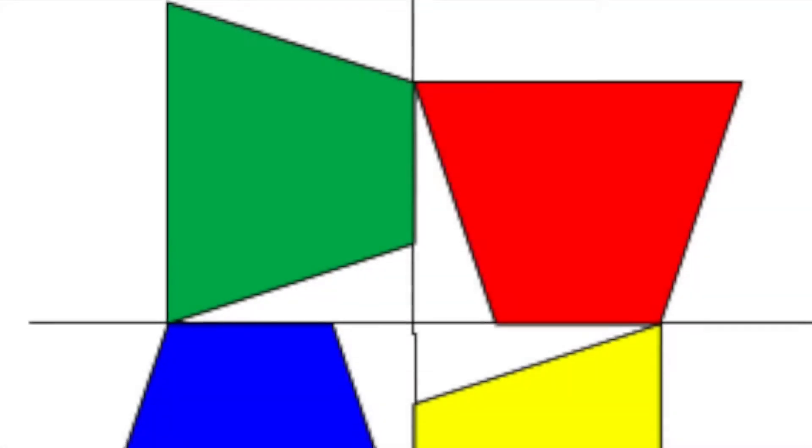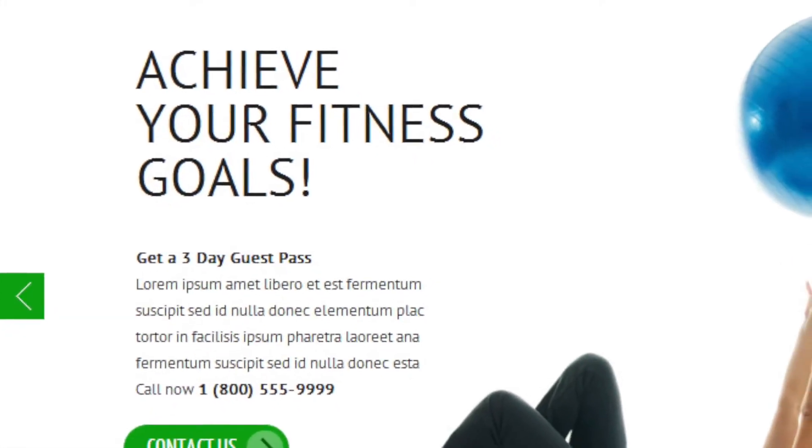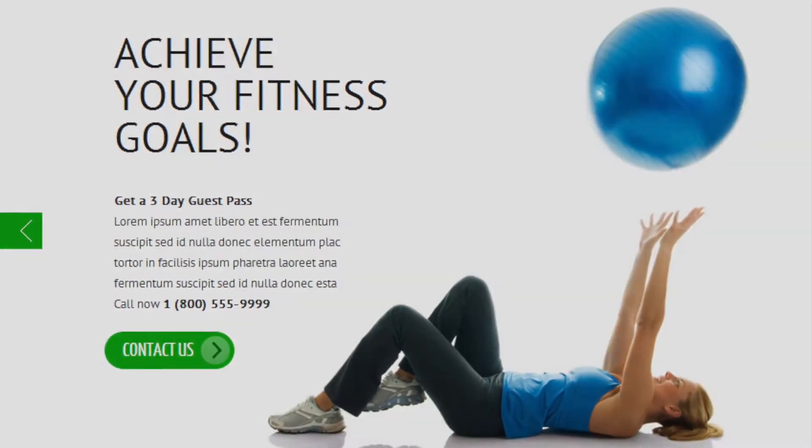Balance may occur due to symmetry within asymmetry in horizontal or radial execution or by opposing elements of approximate weight, color, texture, value, and size. It may occur within positive or negative space between type, images, or design elements.